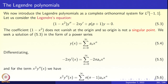Now we go to the next example: Legendre polynomials. Legendre polynomials give another orthonormal system on the interval [−1, 1]. The Legendre polynomials on L² of [−1, 1] form a complete orthogonal system. The Legendre differential equation is (display 5.3): (1 − x²) y'' − 2x y' + p(p+1) y = 0.